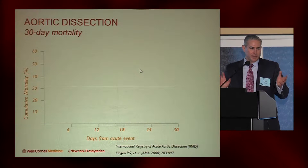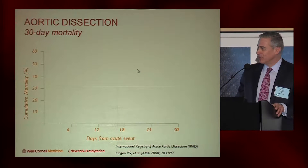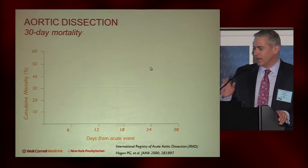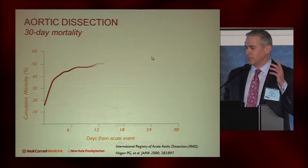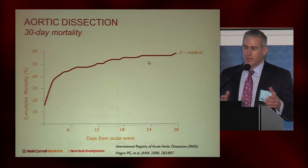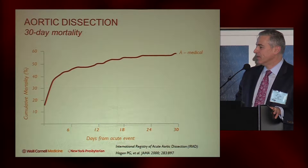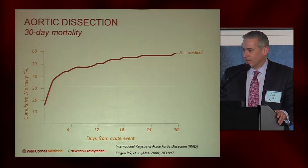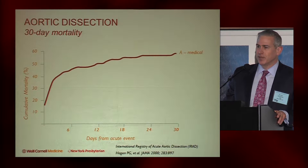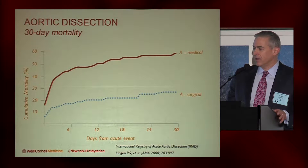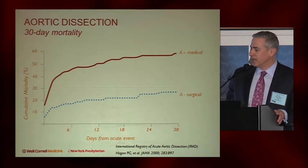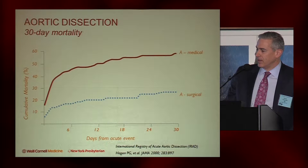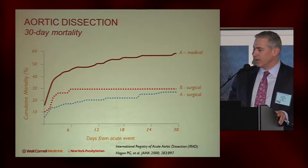This is some data from the IRAD registry looking at mortality of aortic dissection. There's a big distinction as to whether you have a type A with arch or ascending involvement or type B. If you have a type A dissection, 30-day mortality is quite high — around 60% if treated medically. Surgery is the treatment, and it significantly reduces 30-day mortality in type A dissection.